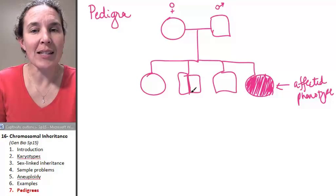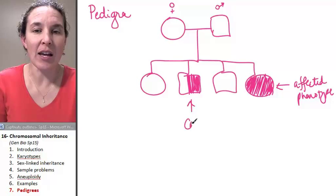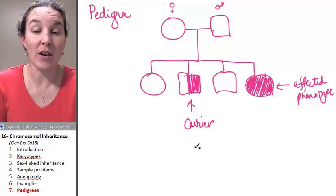If you see someone that's half colored in, that usually indicates that they are a carrier of the condition, so they're heterozygous.